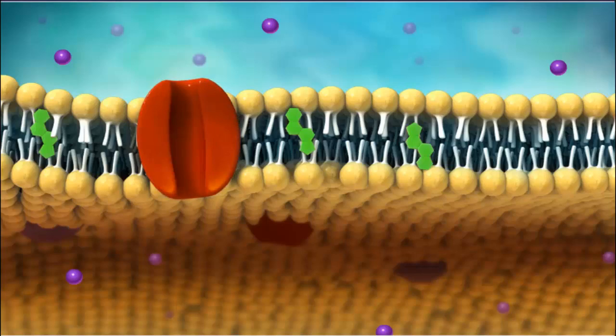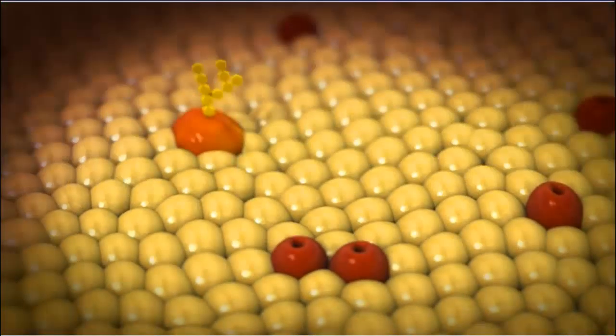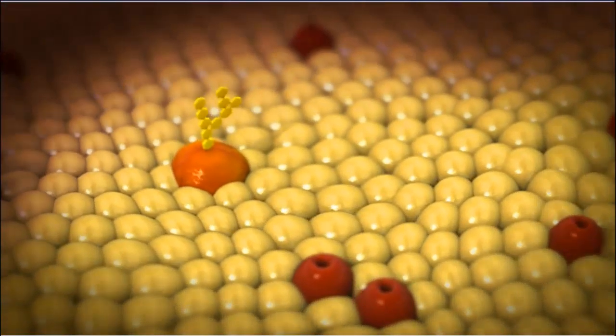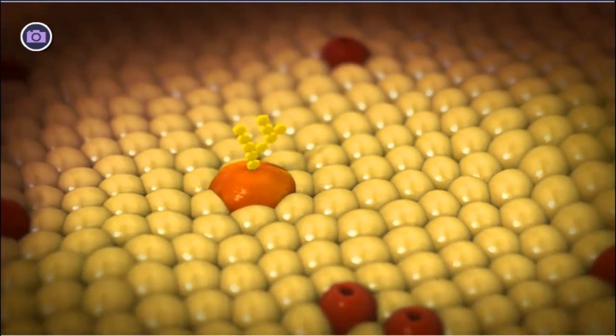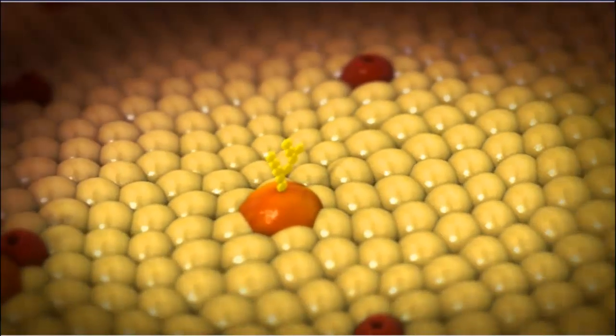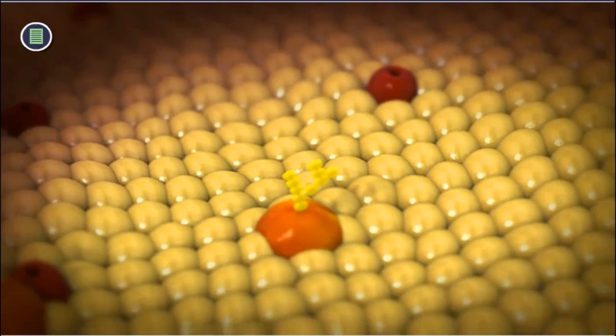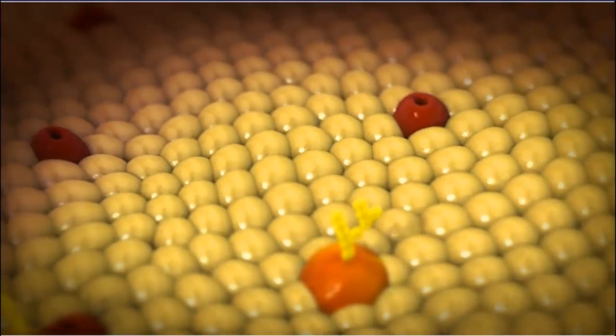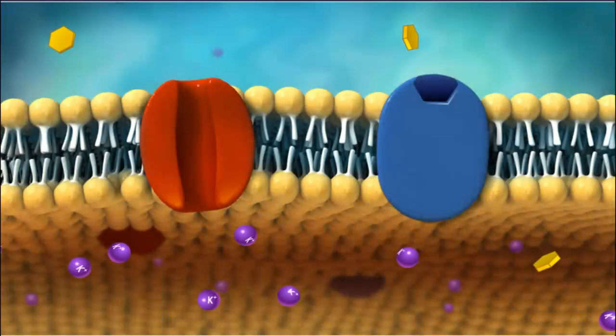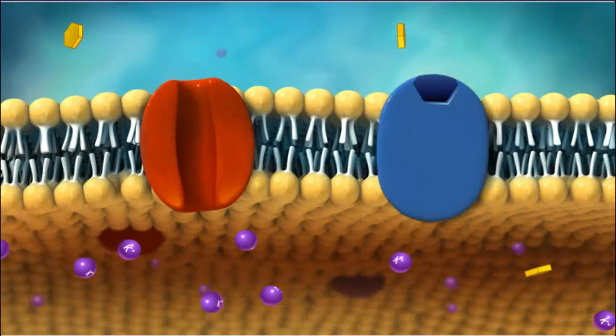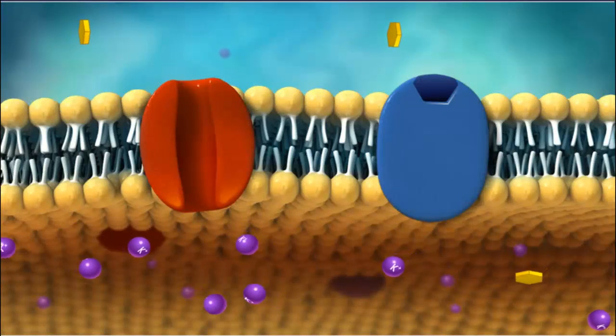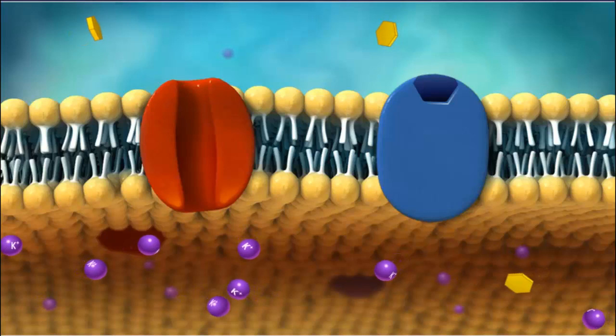The entire structure of the plasma membrane can be described as a fluid mosaic model. The phospholipid bilayer has properties resembling fluids, and the differing proteins and their attachments on either side of the membrane resemble a mosaic. The plasma membrane is the gatekeeper of the cell, allowing certain substances in and out of the cell at certain times in certain amounts.